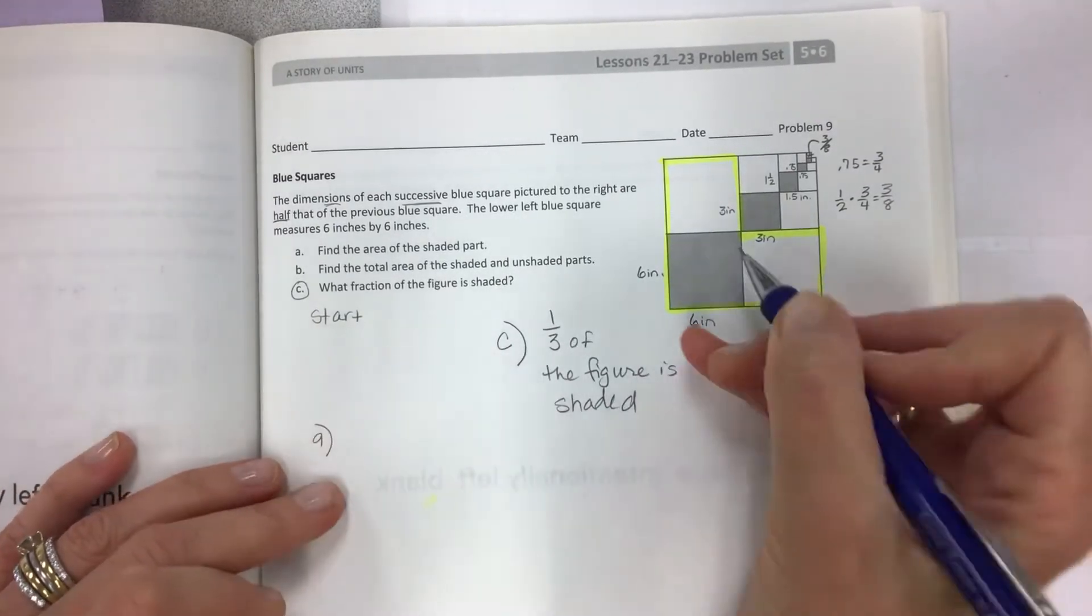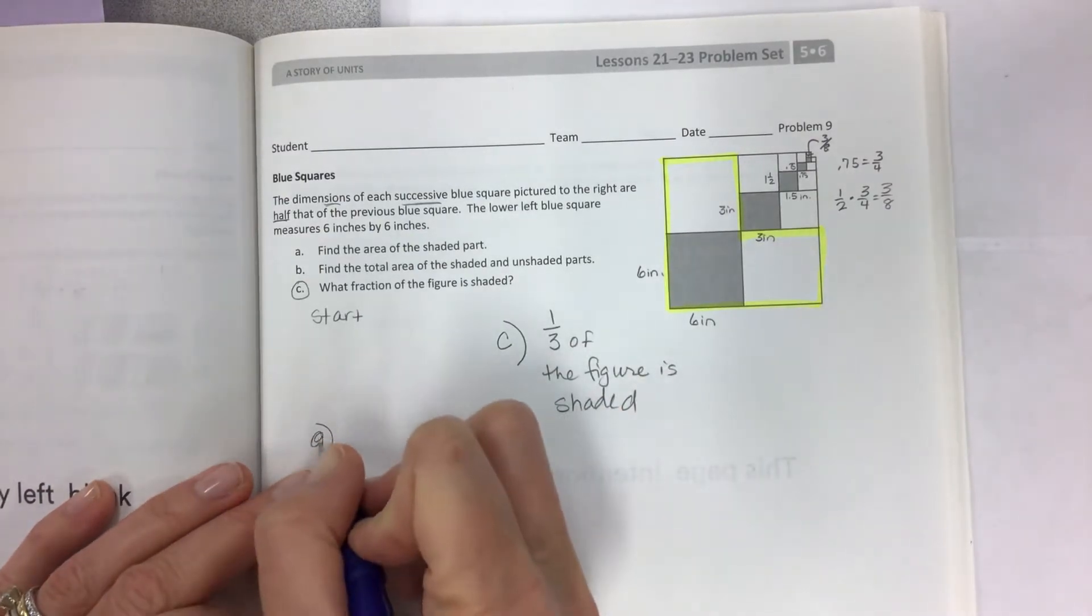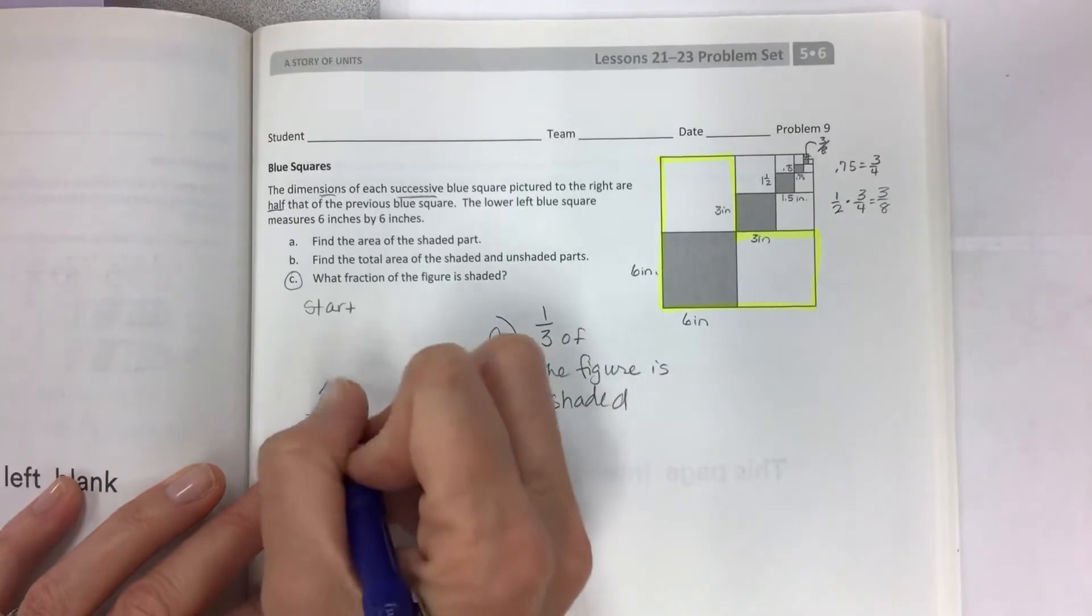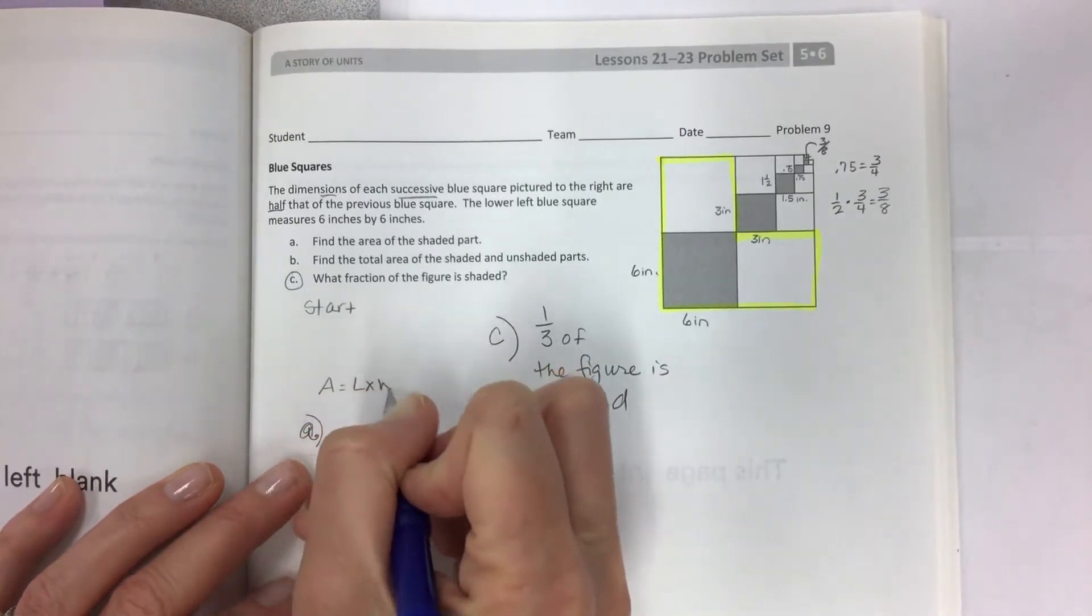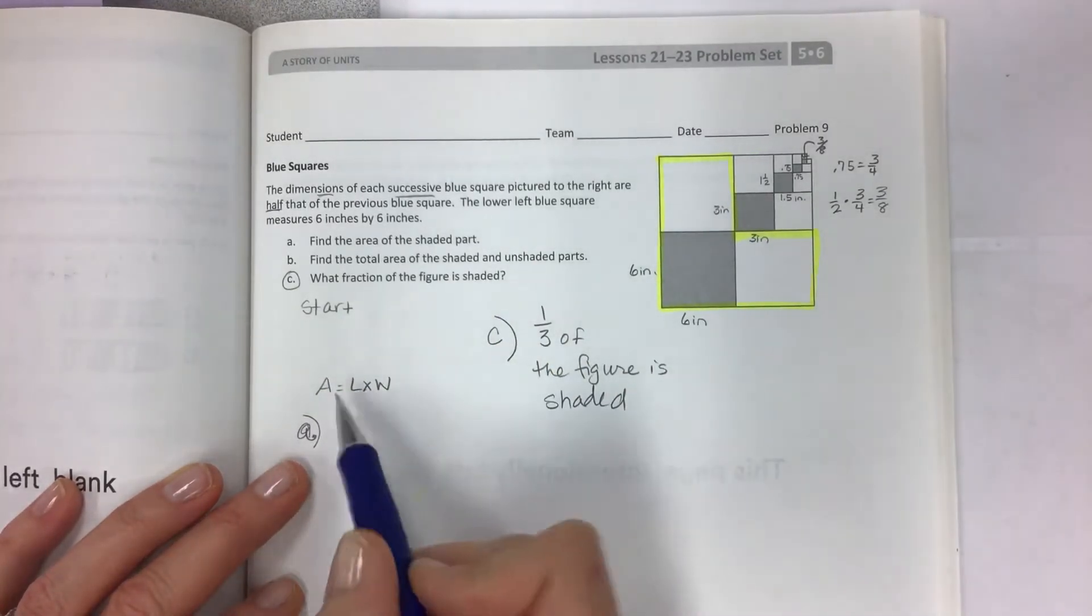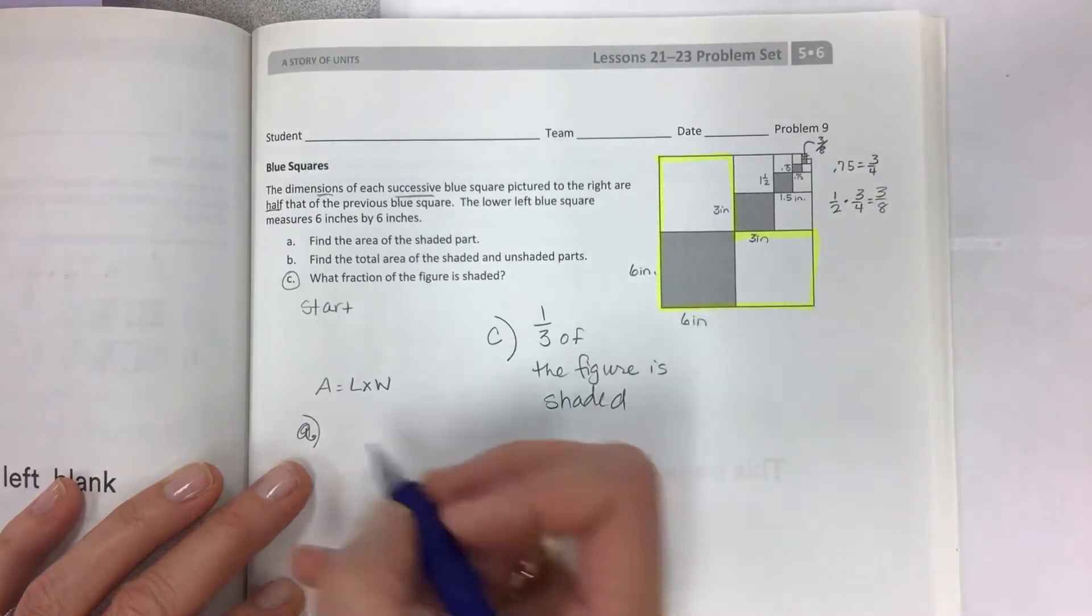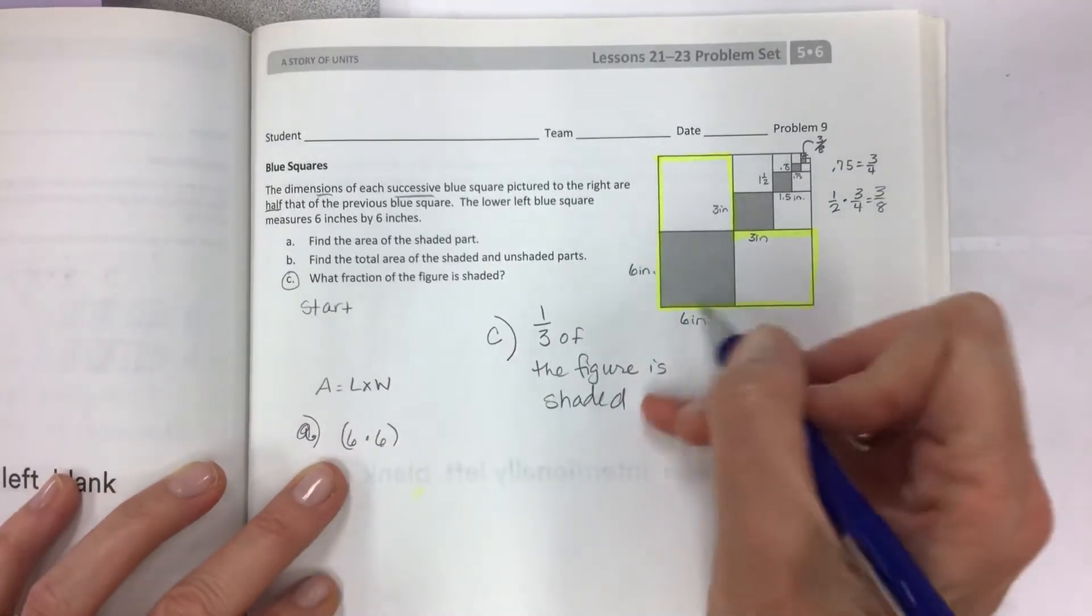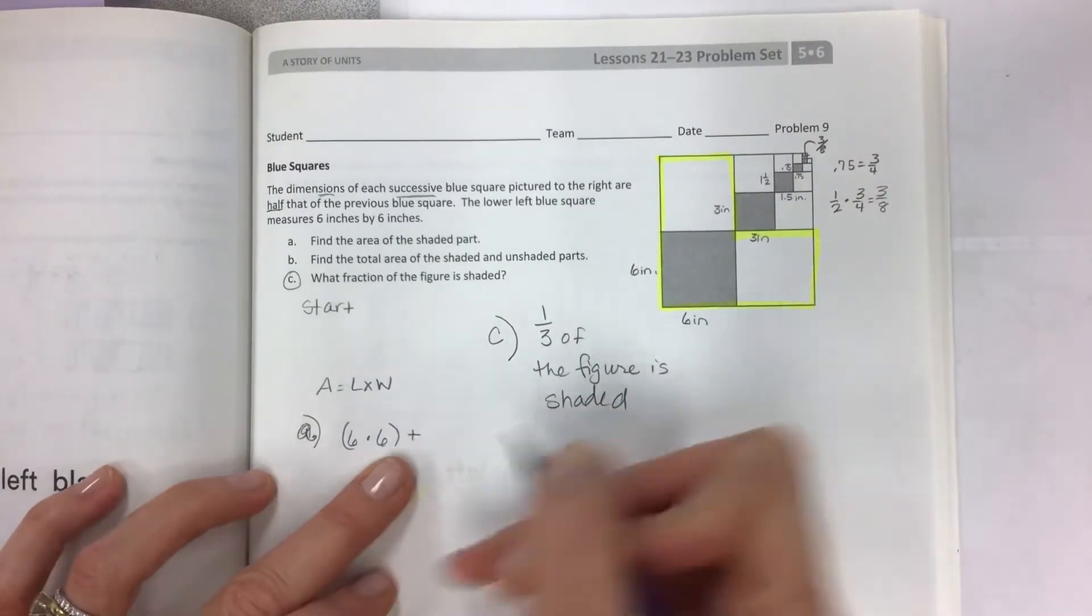And now that you recognize that it's only one third that's shaded, now we can figure out what the shaded part is. So we do have to do some big calculating. So let's get started with A. So in order to start we're going to do, of course, area equals length times width, which you're never going to forget because you write it every time we talk about it.